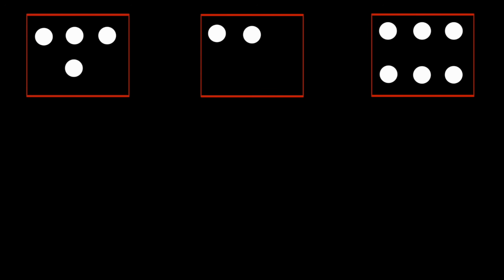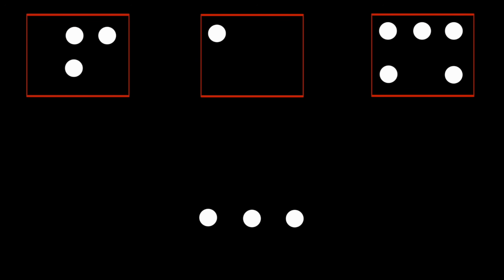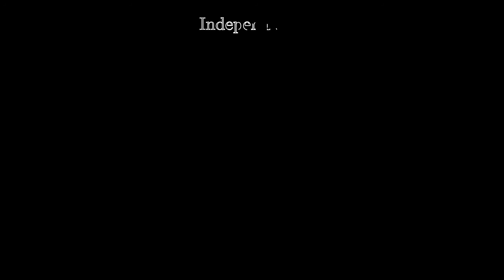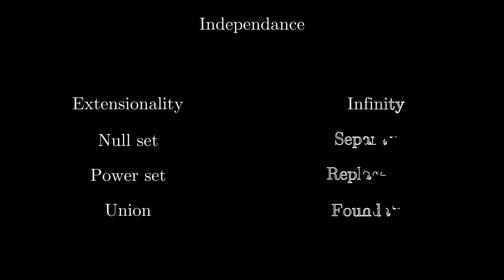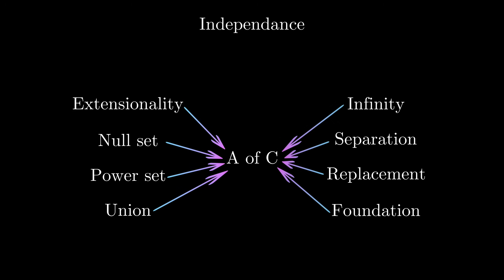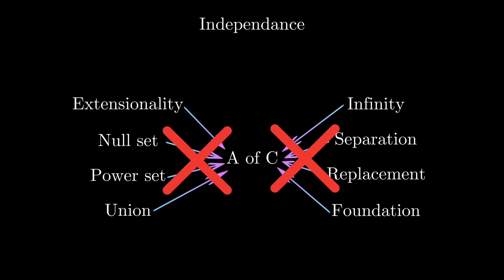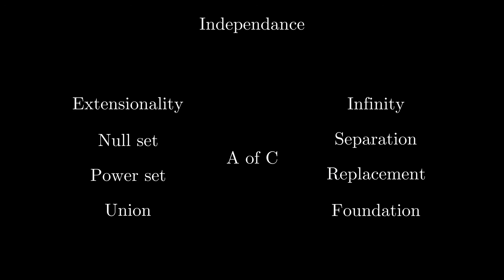It does not even sound like something we must assume — if you have the sets, simply take any elements you want. So why even declare it as an axiom? Well, if you speak the strict language of first-order logic, it turns out that the axiom of choice is independent of all other axioms. It means that if you use all the axioms from Zermelo-Fraenkel, you can neither prove the axiom of choice is true nor that it is false. So the existence of a choice function is not guaranteed by the other axioms.